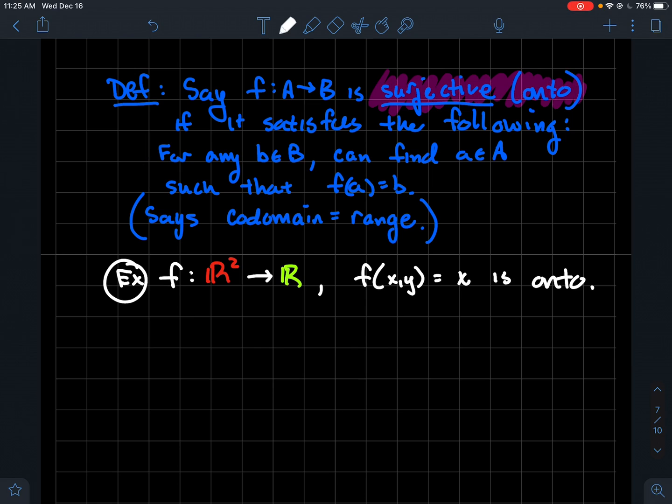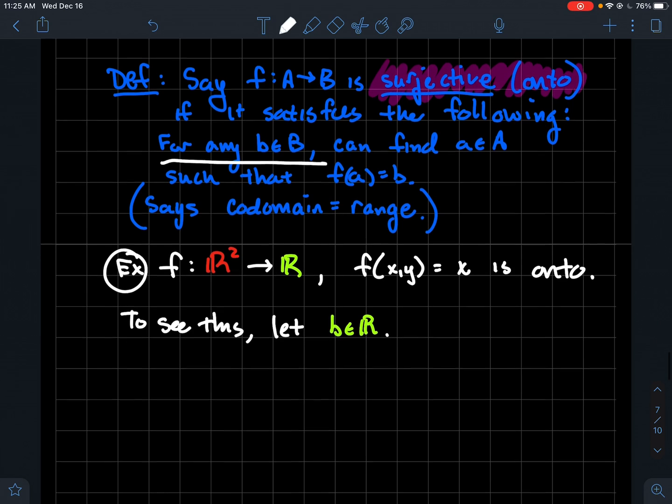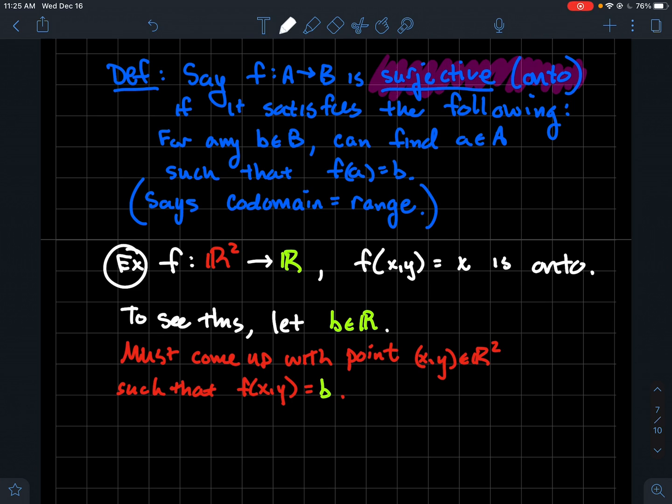So I claim that this thing's onto. So just to illustrate, what are we going to do to see this for any b in the codomain? So we should just let b be any real number. Now, what I'm going to do right below this is just kind of some of my scratch work here. What am I supposed to do? Okay, I've got any arbitrary real number. I have to come up with some point x, y, that gets sent to b, so that f sends x, y to b.